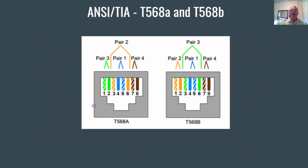The wiring on the RJ45 ends is still required knowledge for the CCNA — the T568A and T568B standards. On the A standard, it starts with white-green, green on the left side of the RJ45, then white-orange, then the blue pairs in the middle, then the other orange, then white-brown and brown. It always goes stripe, solid, stripe, solid, stripe, solid. On the 568B standard, the left side starts with white-orange, orange, then white-green.